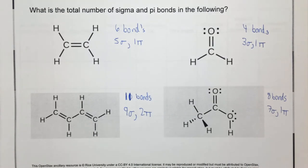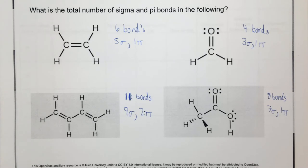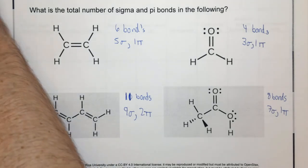In the next section, we're going to look at combining these covalent bonding theories to see how everything basically stems from the Lewis structure. Once you have the Lewis structure, you can calculate many other things. We'll look at three examples where we draw the Lewis structure and figure out everything we've talked about in chapters seven and eight related to covalent bonding.